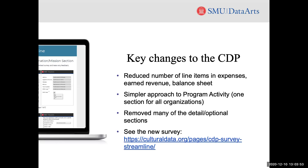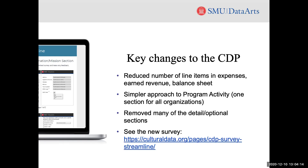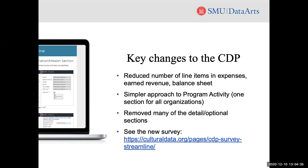Before we jump into those new fields, I want to review some of the key changes made to the survey. We have reduced the number of line items in expenses, earned revenue, and the balance sheet — all of these sections are significantly shorter, and the expense section in particular has been drastically reduced. We're trying a simpler approach with the program activity section. In the current profile, you filled out a separate section for each type of program provided. In the new CDP, there will be just one program activity section standard to all organizations, and you will enter all of your attendance into one place. Finally, we've removed many of the optional detail sections that added to the overall length of the survey.